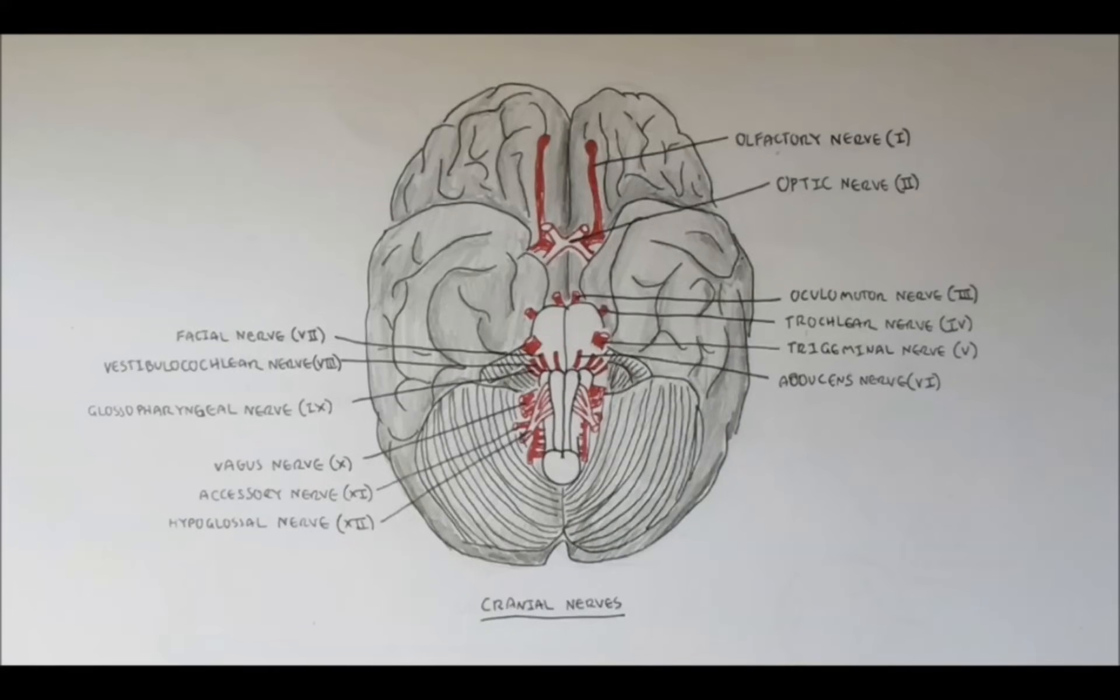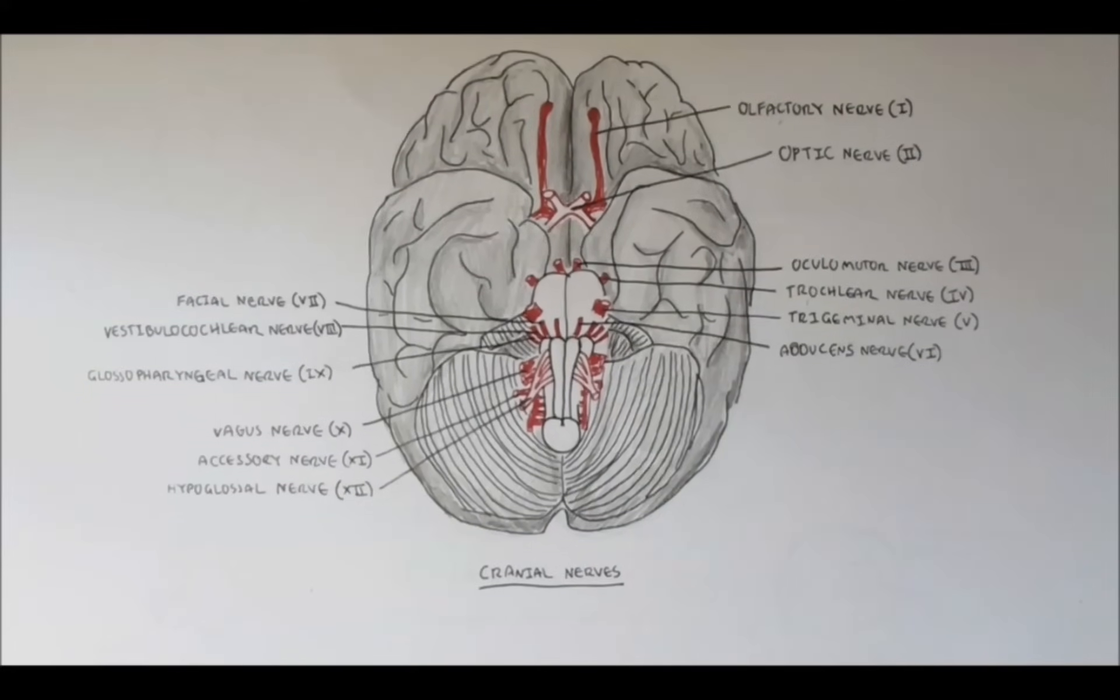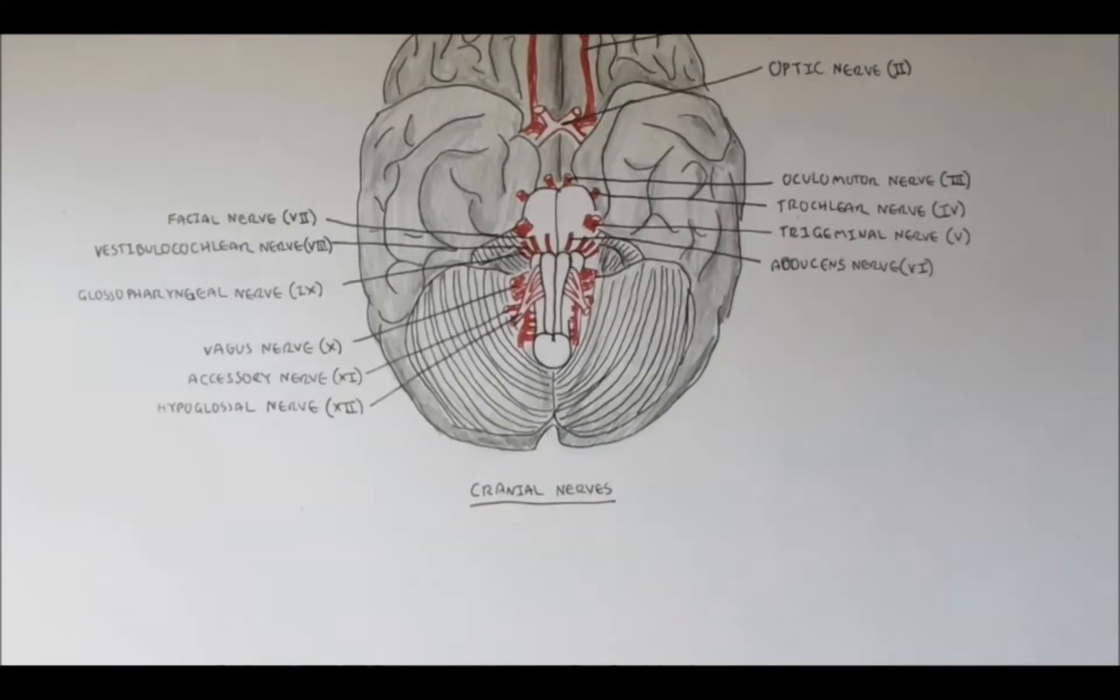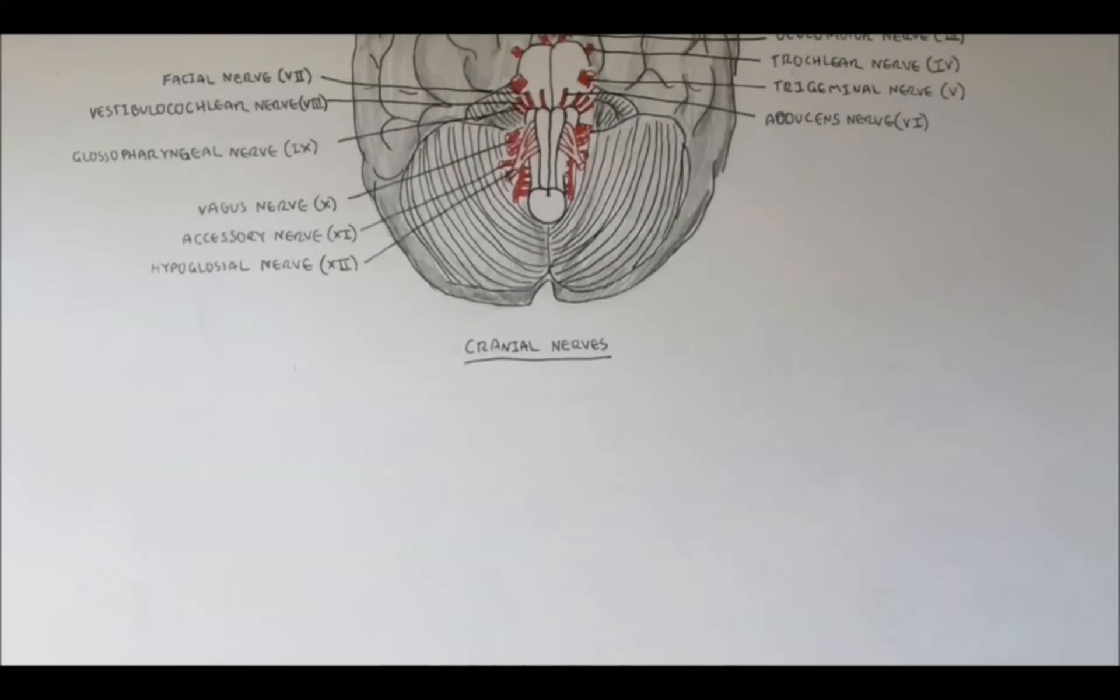So as we've seen, there are 12 cranial nerves, all with different, yet some with similar functions. We will look at the brief function of each of these nerves, the disorders and disruptions, and the signs and symptoms that may occur in each of these nerves if they are damaged, as well as the potential causes.